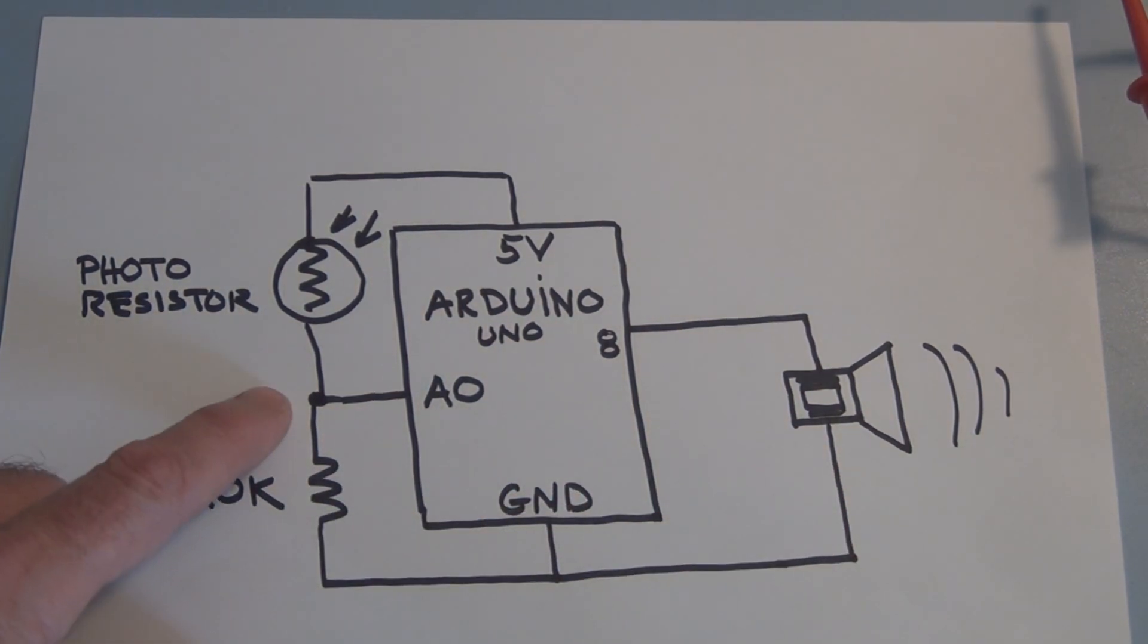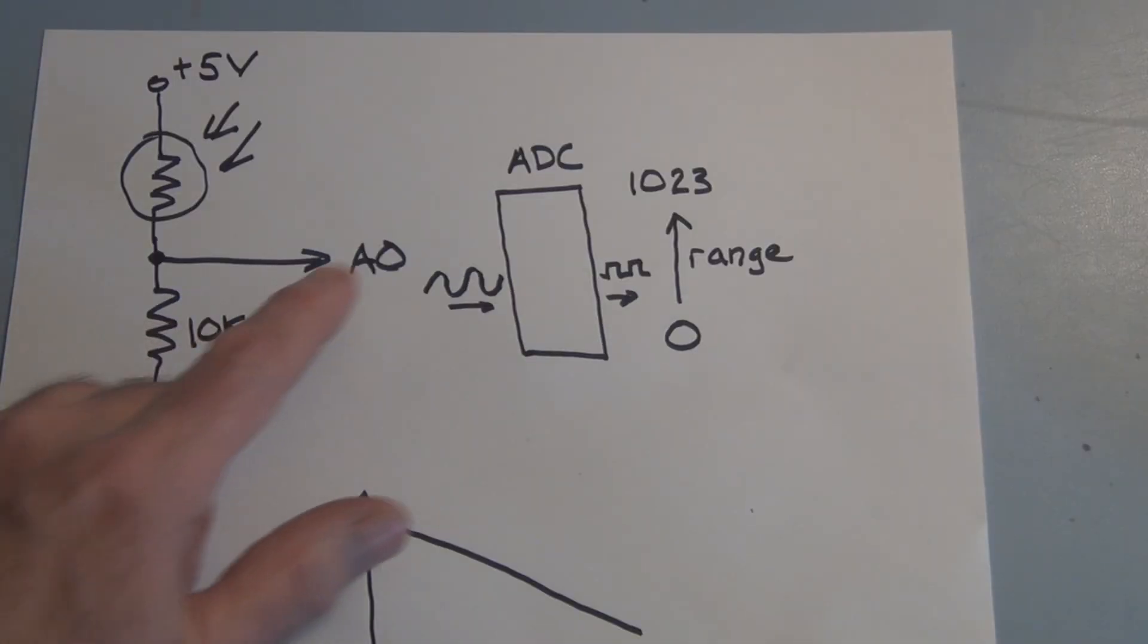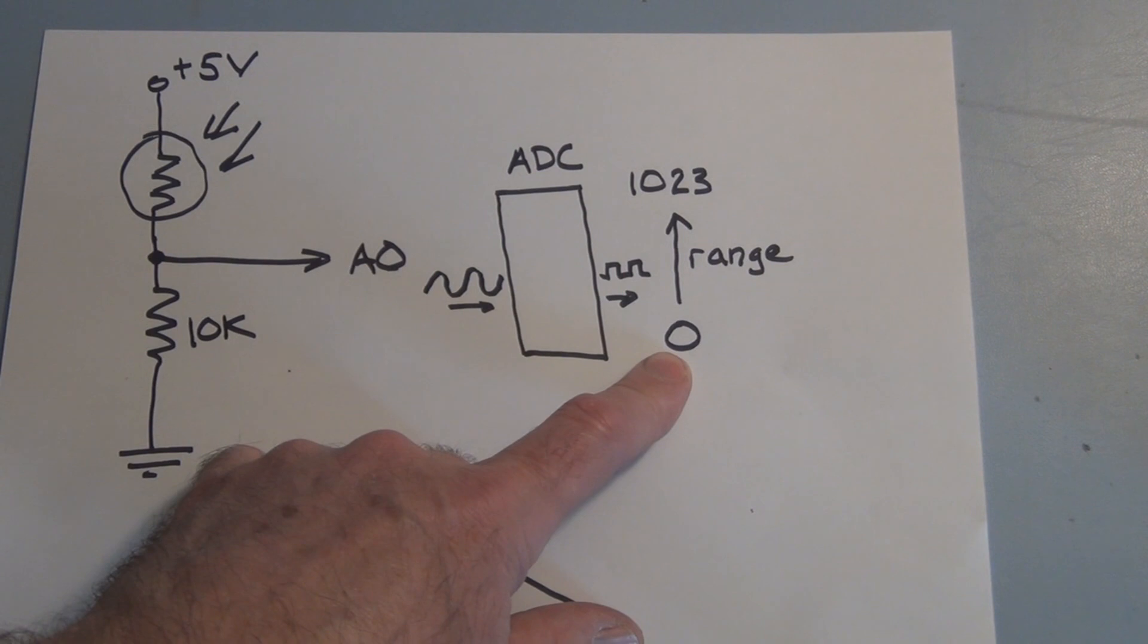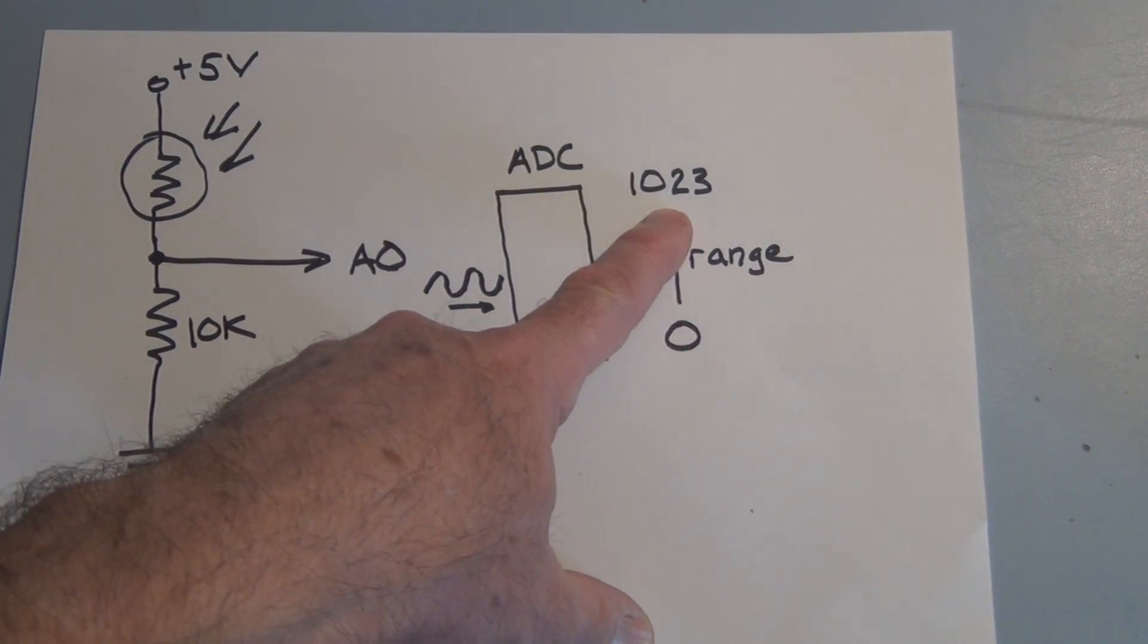So let's talk about the limits of this voltage divider and how we're going to overcome that with software that will help us utilize the full range of the analog to digital converter on the Arduino. So we're going to take an analog voltage that varies with light intensity and convert it to digital form using the onboard analog to digital converter that has a range of 0 to 1023 in its digital representation.